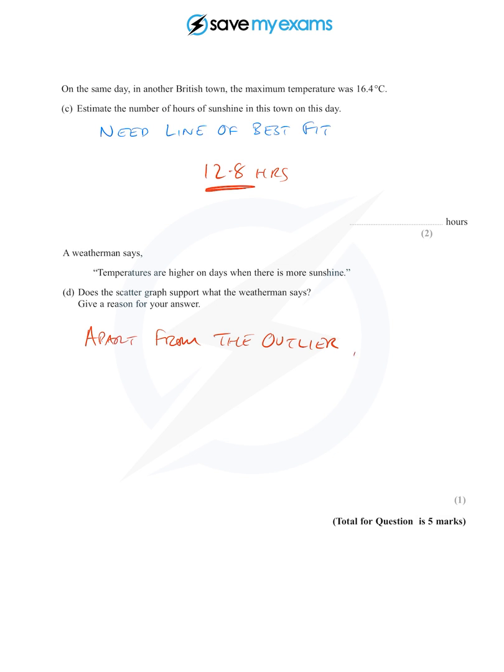Apart from the outlier, it seems that the higher the number of hours of sunshine, the higher the temperature.